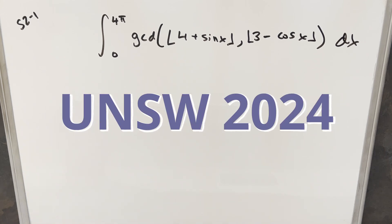Okay, we're here to another integral from the UNSW Integration B 2024. This is semifinals round two problem one. We have the integral from zero to four pi of the GCD of the floor of four plus sine x and the floor of three minus cosine x dx.